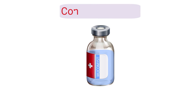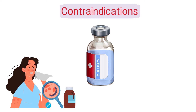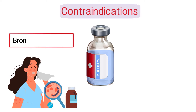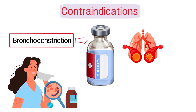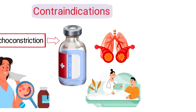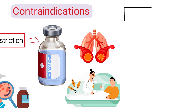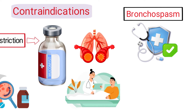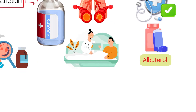Mucomist is contraindicated in patients who are allergic or sensitive to the drug. Because bronchoconstriction is a common side effect, patients with asthma or other obstructive lung diseases must be monitored closely while Mucomist is being delivered. If bronchospasm occurs, it can usually be treated and reversed with an inhaled bronchodilator drug such as albuterol.